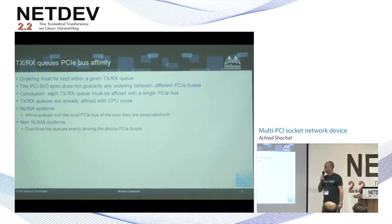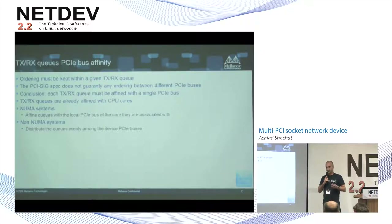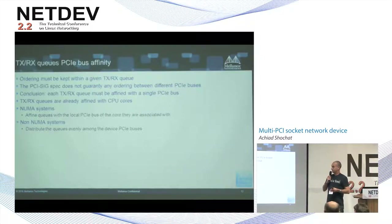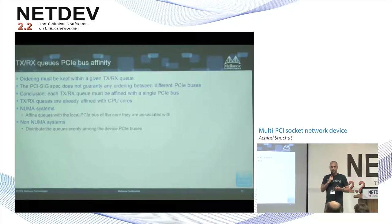One of the problems with having multiple PCI buses is ordering. Each transmit queue and receive queue of a network device must maintain ordering within itself. If you have a TXQ and submit two XMIT calls, you expect the two packets to be sent to the wire in order. But from the PCI specs perspective, there is no ordering guarantee between two different PCI buses. So you cannot have a single TXQ transmit packets over two PCI buses. The conclusion is that each TXQ — and the same goes for RXQ — must be affined with a single PCI bus.